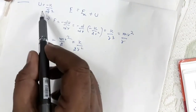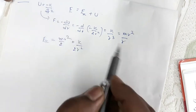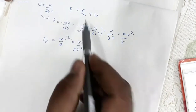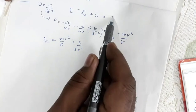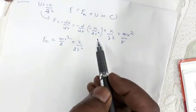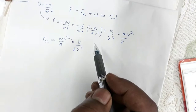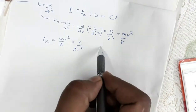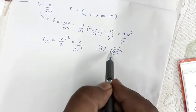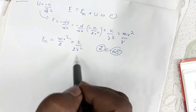The potential energy is -k/(2r²). Substituting the kinetic energy and potential energy, the total energy comes out to be zero. So for question number 68, the correct option is number 2 — the answer is zero.